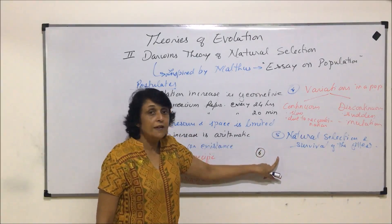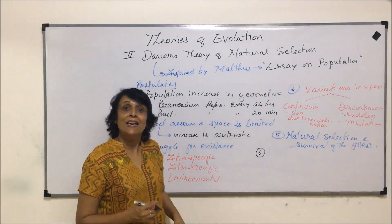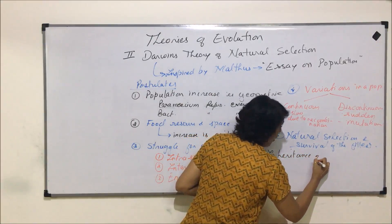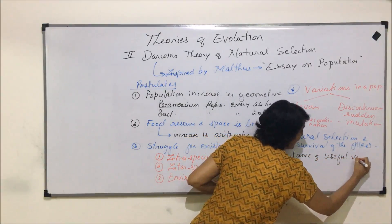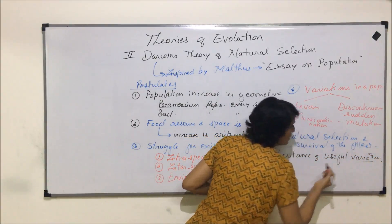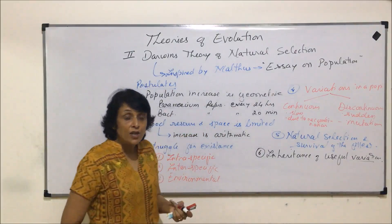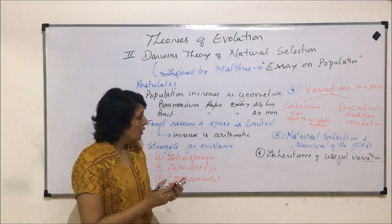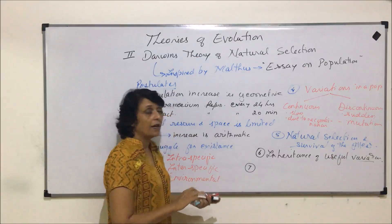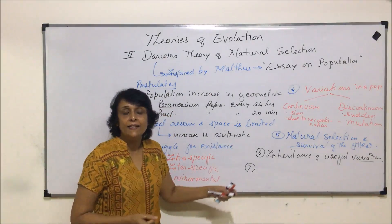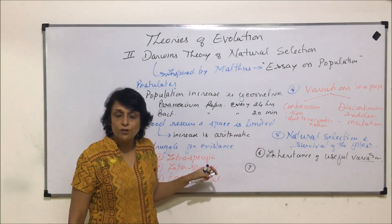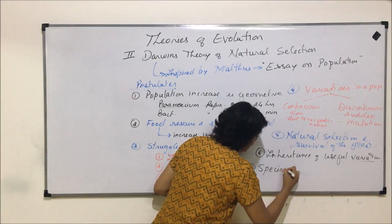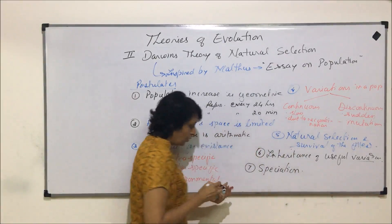The sixth postulate: those characteristic features or variations which are most suited get inherited — inheritance of useful variations. Since variations are genetic, if they are useful they get inherited from one generation to the next. When these variations accumulate over many generations, a new organism or new species is formed — that is speciation.